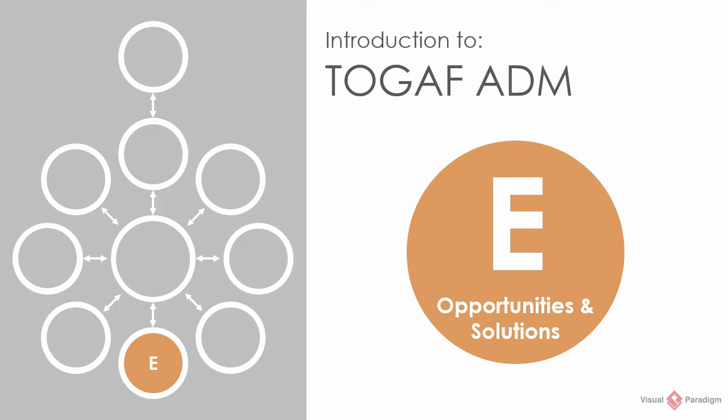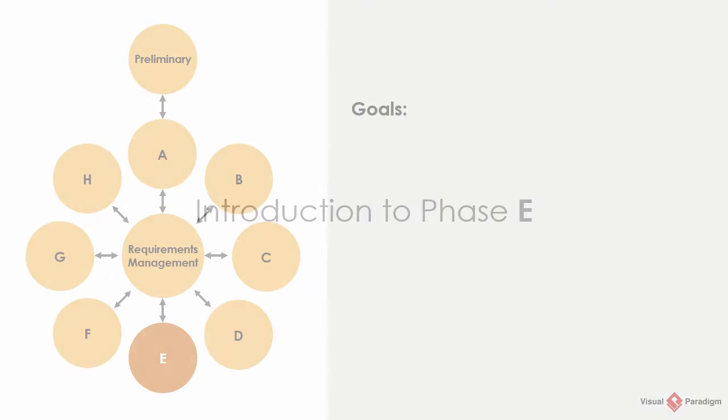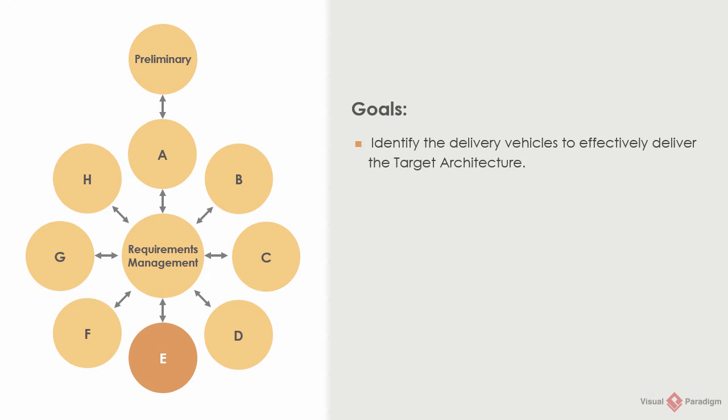Welcome to the introduction of TOGAF ADM Phase E, Opportunity and Solution. In the previous phases B, C and D, we developed the baseline and target architectures of all architecture domains and recognized the gaps in between. In Phase E, we focus on how to deliver the architecture. The goal of Phase E is identifying the delivery vehicles to effectively deliver the target architecture.